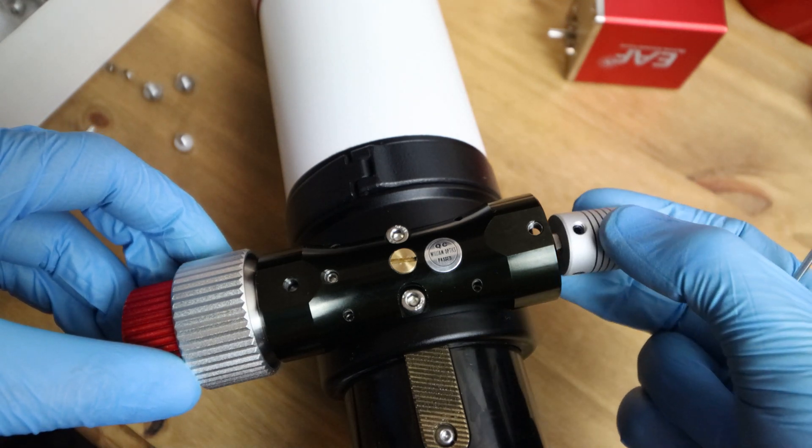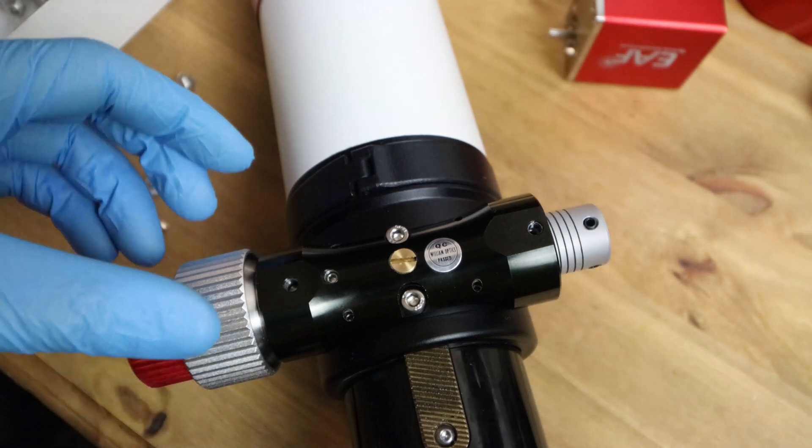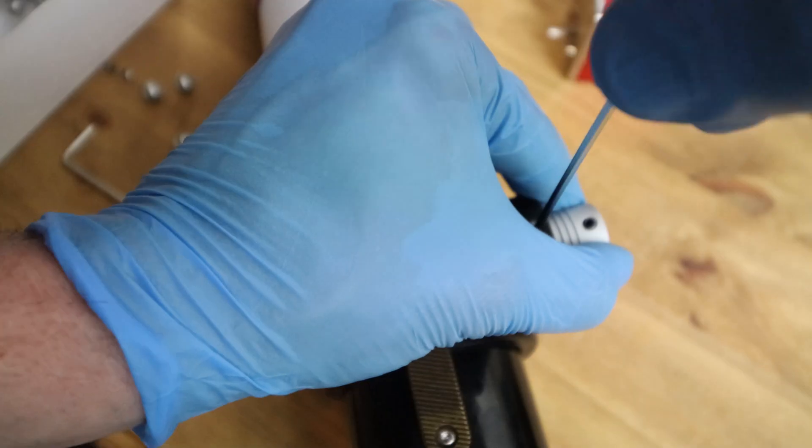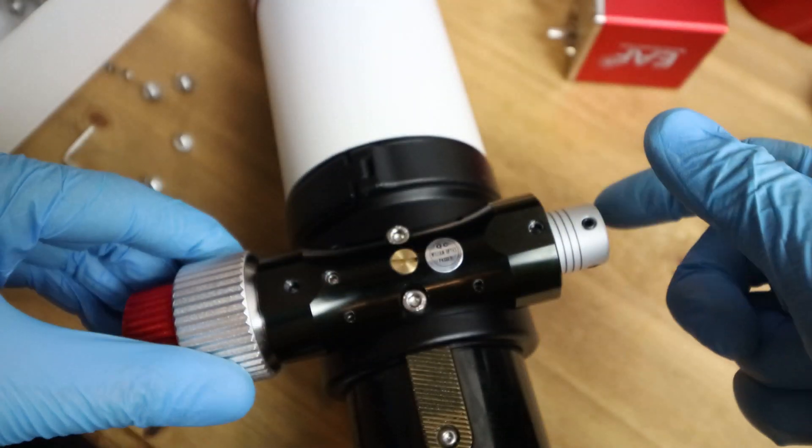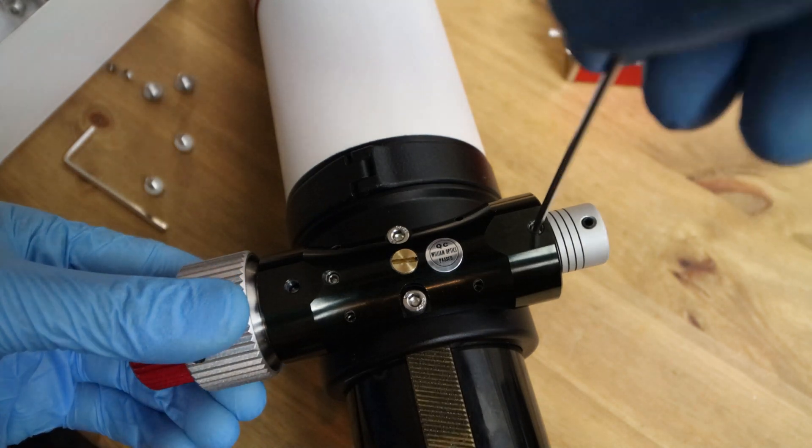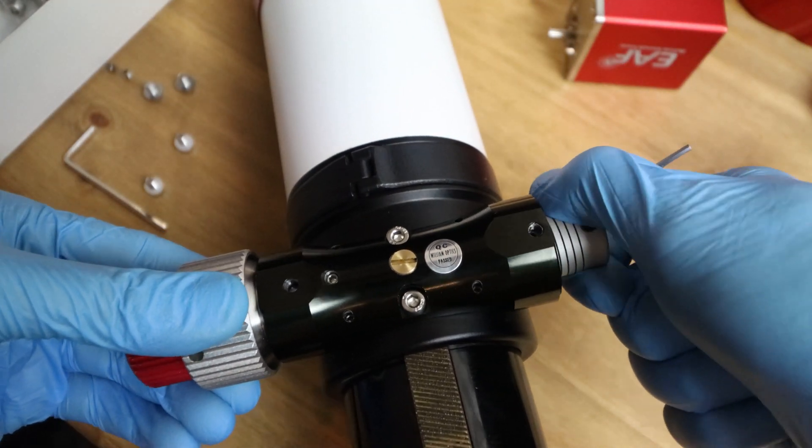What we're now going to do is we're going to get the flexible coupling and fix that on and it's basically the reverse of what we did when we took the wheel off. Make sure you've got the right hole, place it on, line it up with the hole with the grub screw and just nip it up a little. There's one, turn that to find the other one. There we go. Make sure it's on.